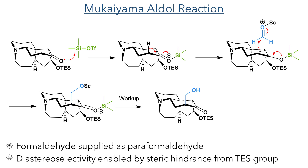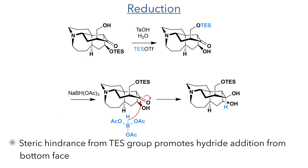This reaction was stereoselective owing to the steric hindrance of the TES group. At this stage of the synthesis, some protecting group manipulation was required. The TES group on the secondary alcohol was deprotected using tosylic acid, and the primary hydroxyl group was protected again using a TES group, which selectively reacted with the primary alcohol as it is more sterically accessible. The TES group present on the primary alcohol was important for the next reaction — a reduction using borohydride — where it served as a steric shield to block the top face of the molecule, allowing the hydride to be added in a stereoselective manner from the bottom face to produce the alcohol in the equatorial position.